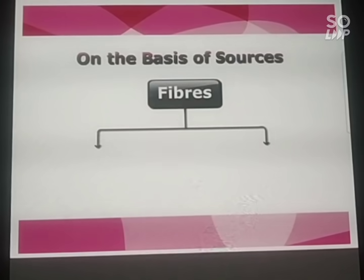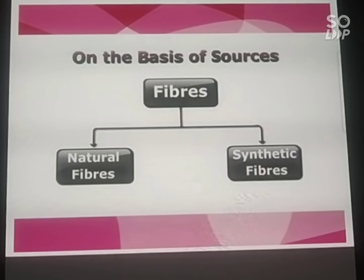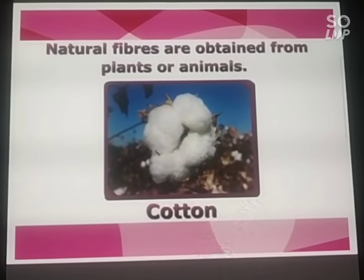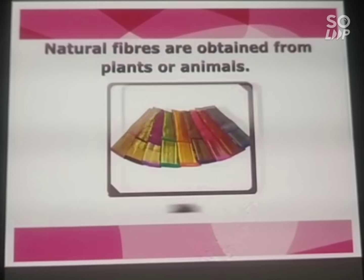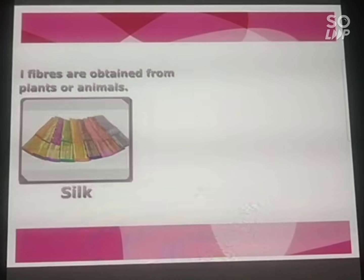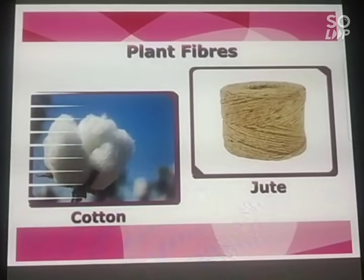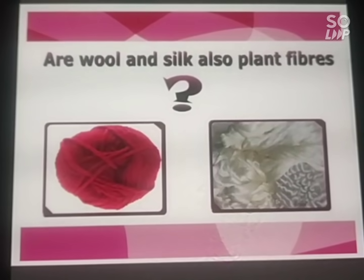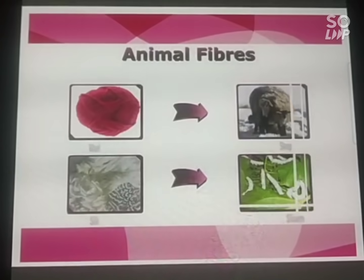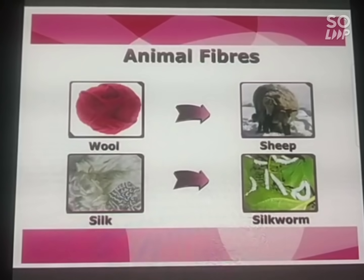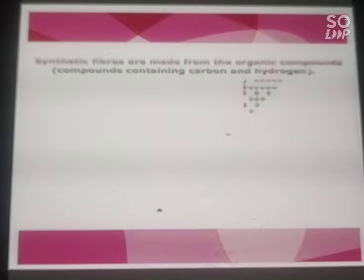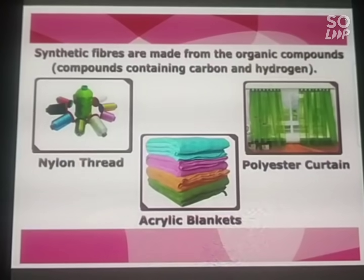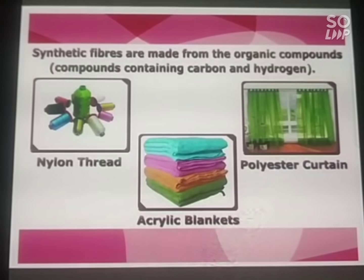Fabrics are made up of fibers - hair-like strands from which all fabrics are made. On the basis of their sources, fibers can be classified into natural fibers and synthetic fibers. Natural fibers are obtained from plants or animals. Cotton, jute, and silk are natural fibers; cotton and jute are plant fibers, while wool and silk are animal fibers. Synthetic fibers like nylon, polyester, and acrylic are made from organic compounds.